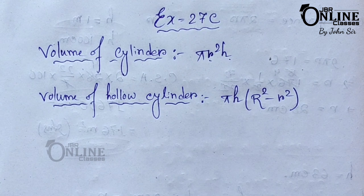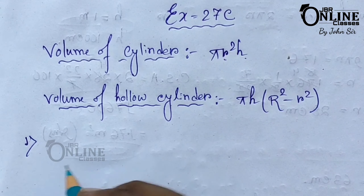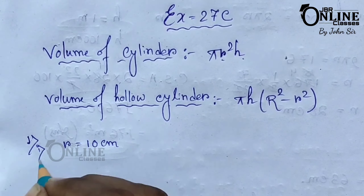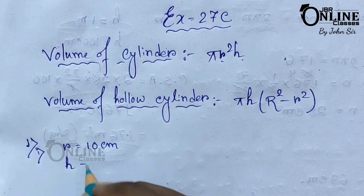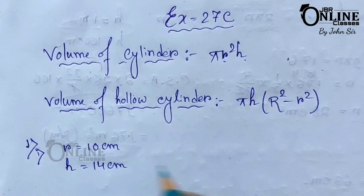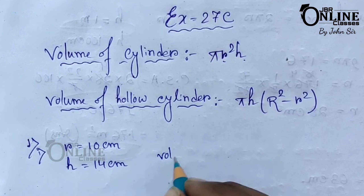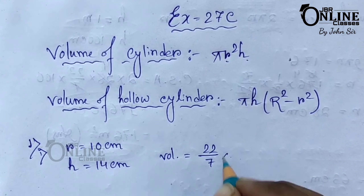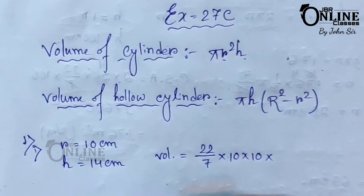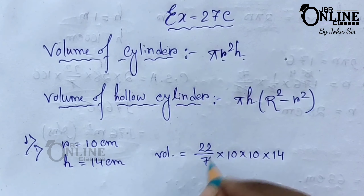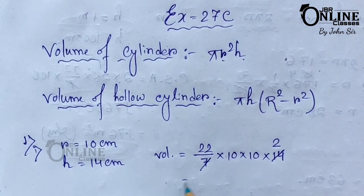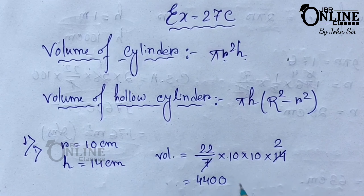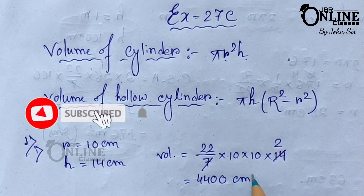Sum number one: radius of base r equals 10 centimeters and height h equals 14 centimeters. Find the volume. Using the formula pi r squared h: 22/7 × 10 × 10 × 14. That equals 44 × 100, so the answer is 4400 centimeter cube.